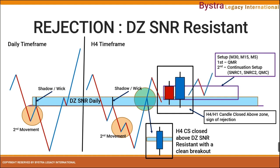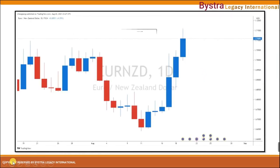Price will then come back to this area and continue on the uptrend. Here I have an example on the EUR/NZD on the daily time frame. The first step is always to mark the danger zone — we go to the monthly, weekly, and daily time frame. In this example, I'm going to show you a breakout on the resistance of the daily time frame that is not the second movement. The second movement breakout happens very often, so I want to show you a resistance that is not the second movement breakout.